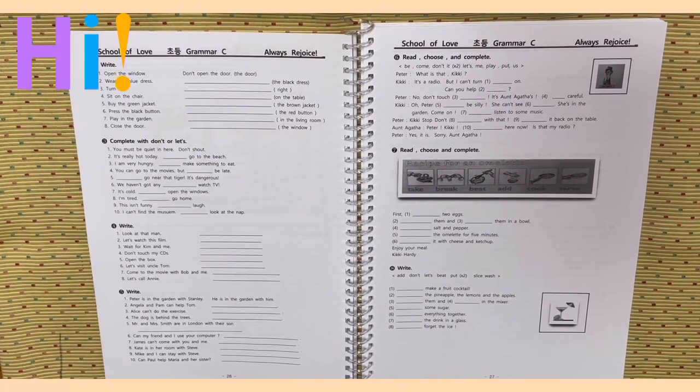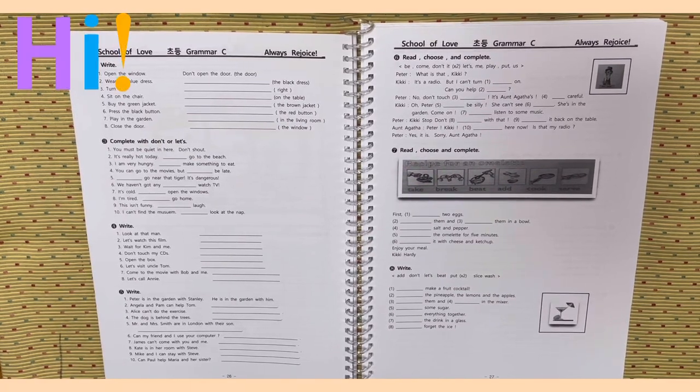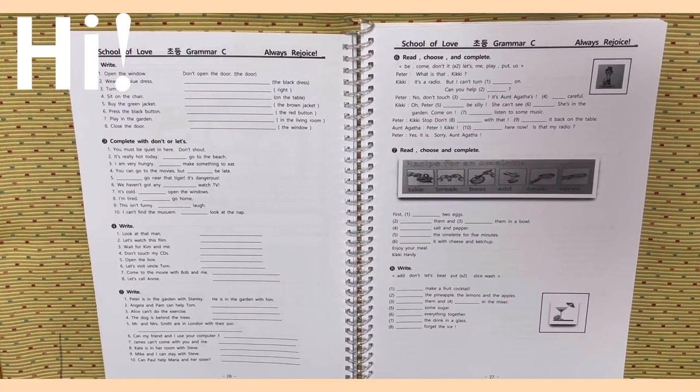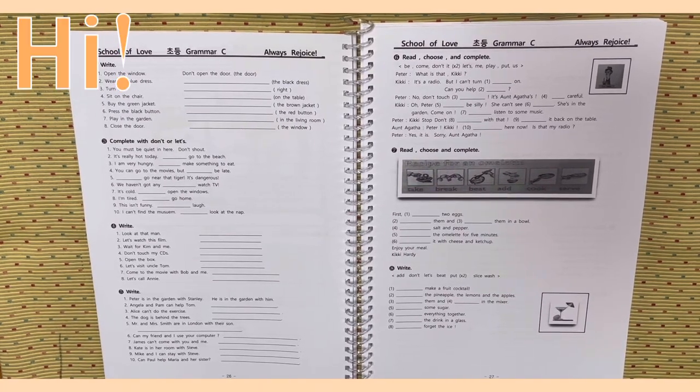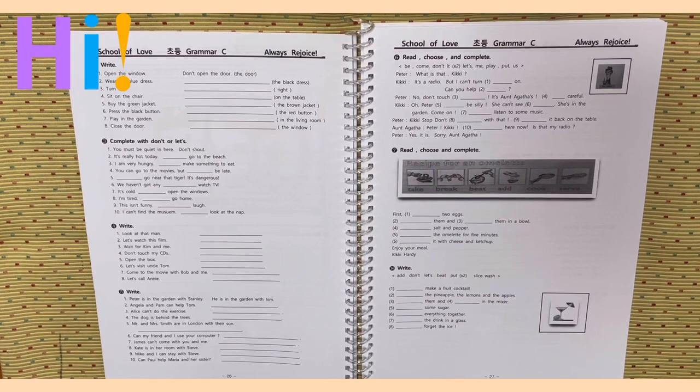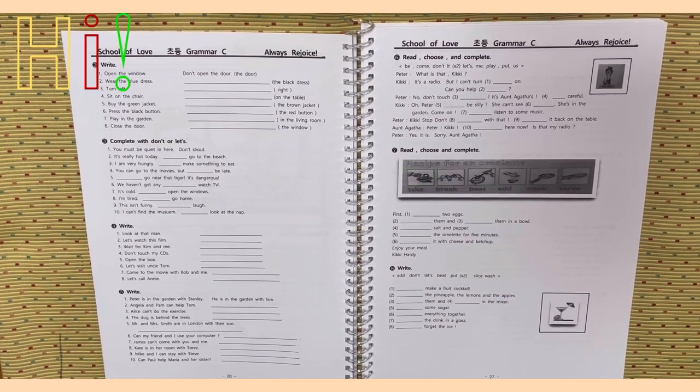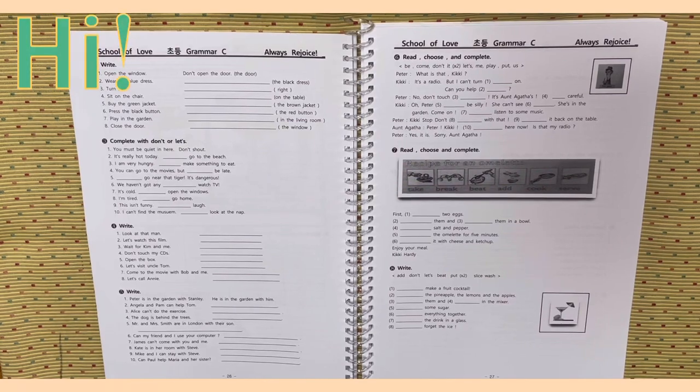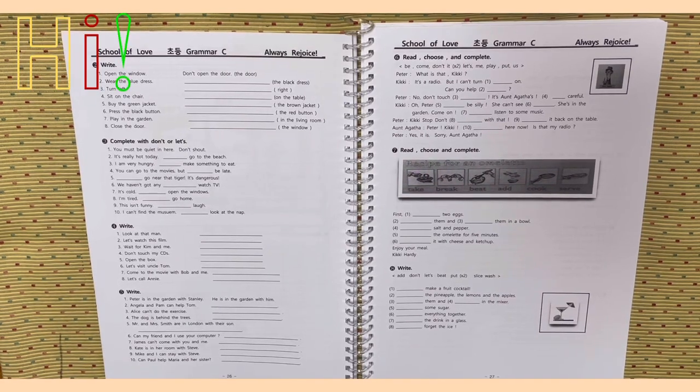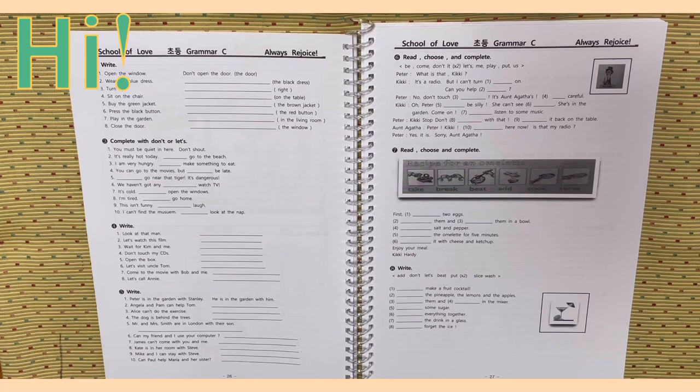Activity 7. Read, choose, and complete. Recipe for an omelet. Take, break, beat, add, cook, serve. First, number 1, break 2 eggs. Number 2, blank them and blank them in a bowl. 4, blank salt and pepper. Blank the omelet for 5 minutes. 6, blank it with cheese and ketchup. Enjoy your meal. Kiki, hearty.